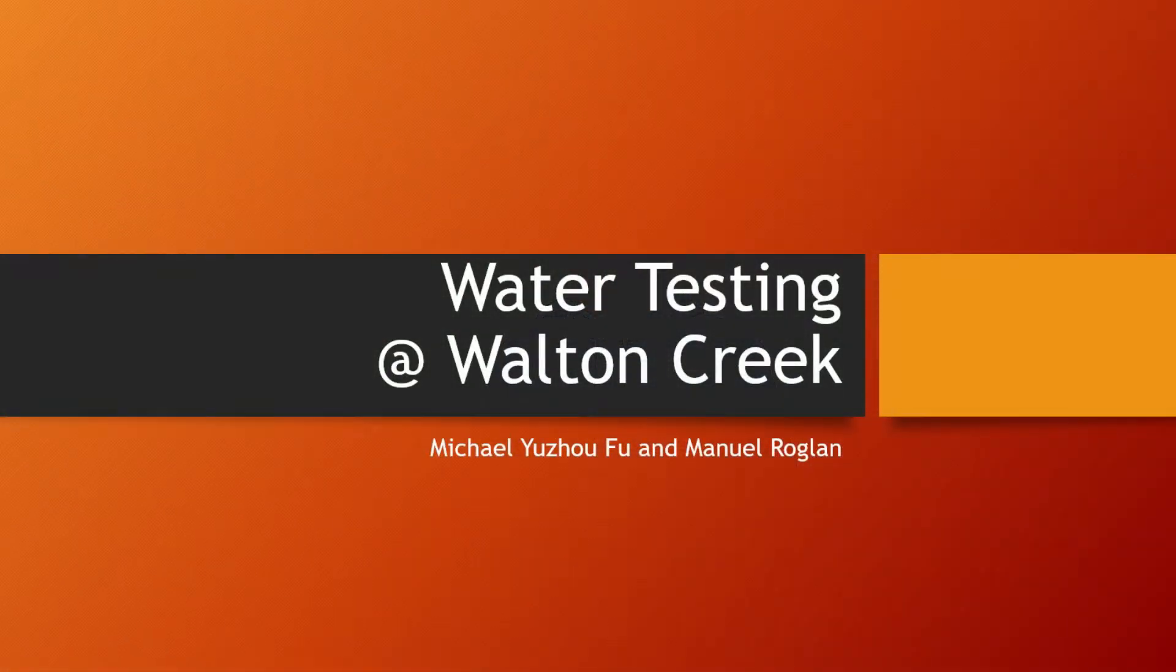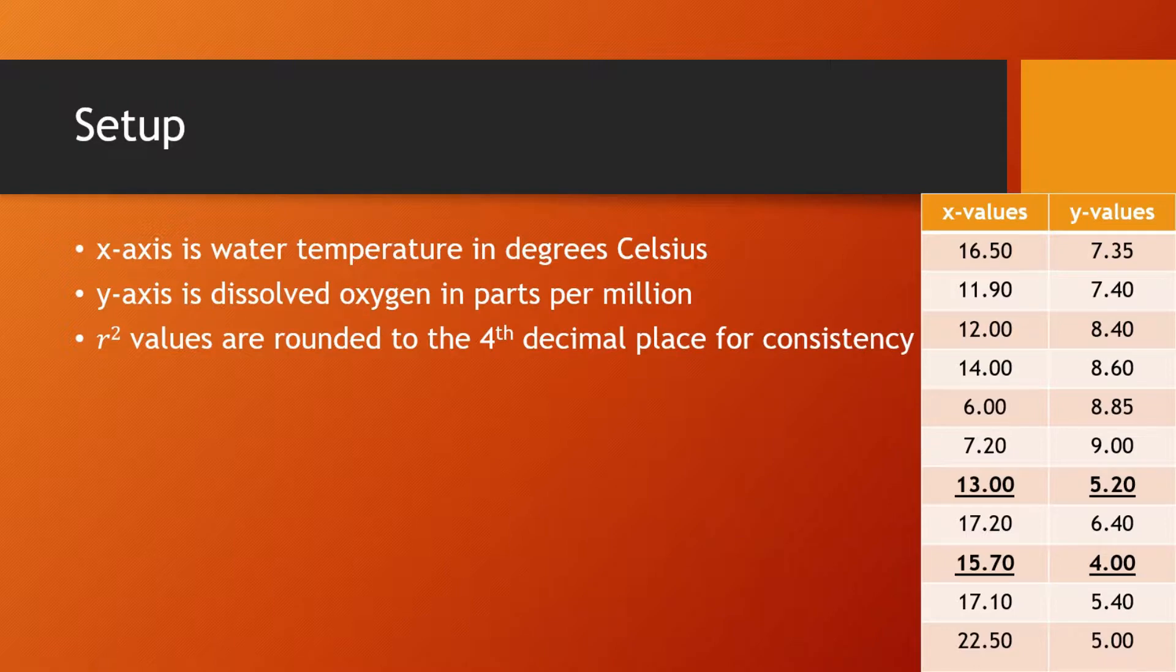Don't worry Bob, here's the data we collected through water testing at Wallen Creek. Okay, so our setup. We had the x values represent water temperature in degrees Celsius and our y values represent dissolved oxygen in parts per million.